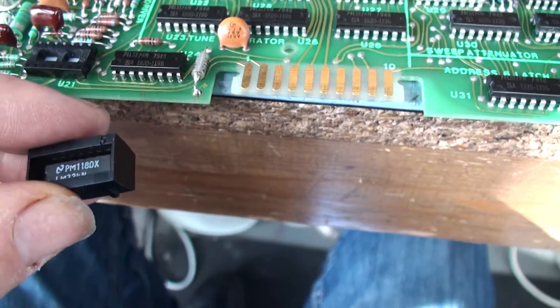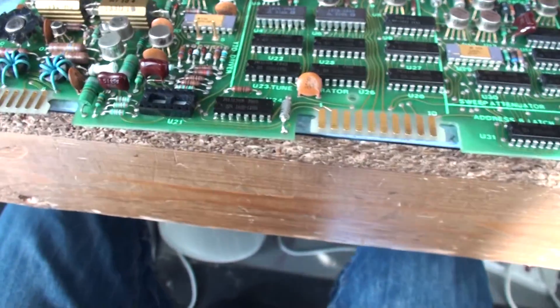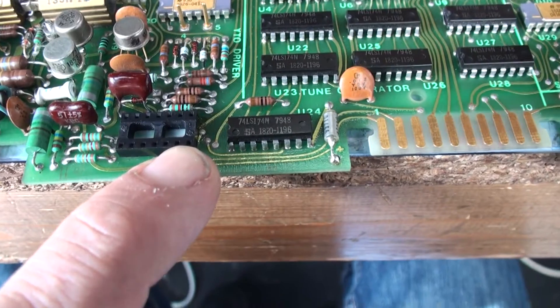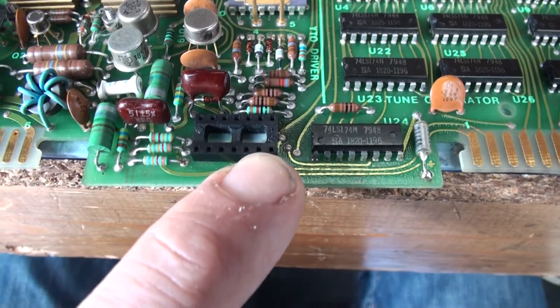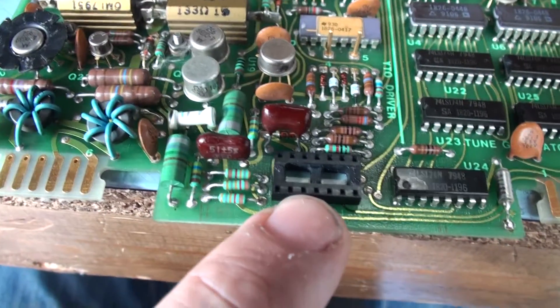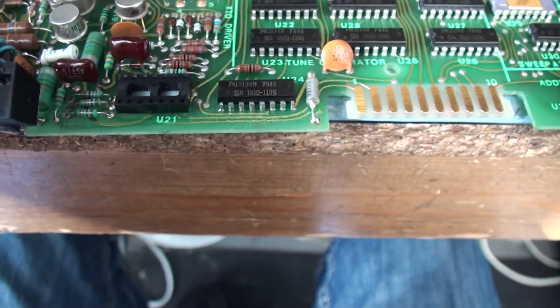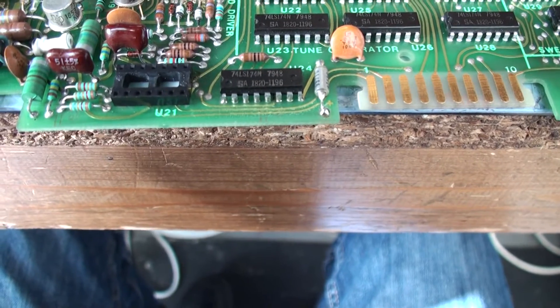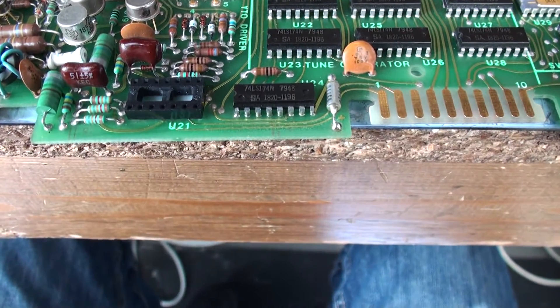So I found another LM324 and what I'm just going to do is I've just replaced it. This is where the chip was, removed the chip, cut the legs off, unsoldered it, fitted an IC socket and I'm going to replace it with this LM324, pop it back into the unit temporarily and see if we get any luck.